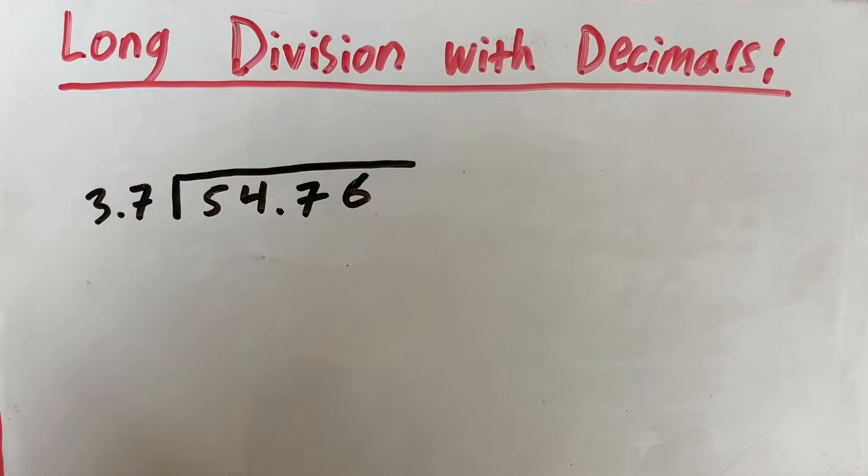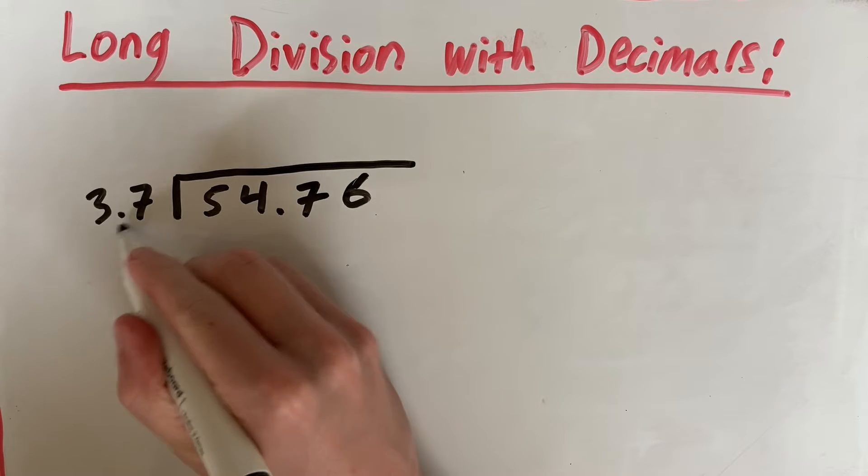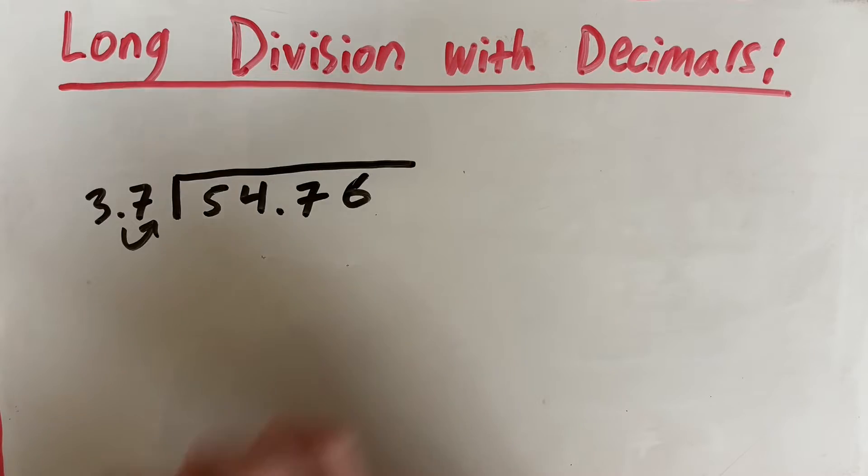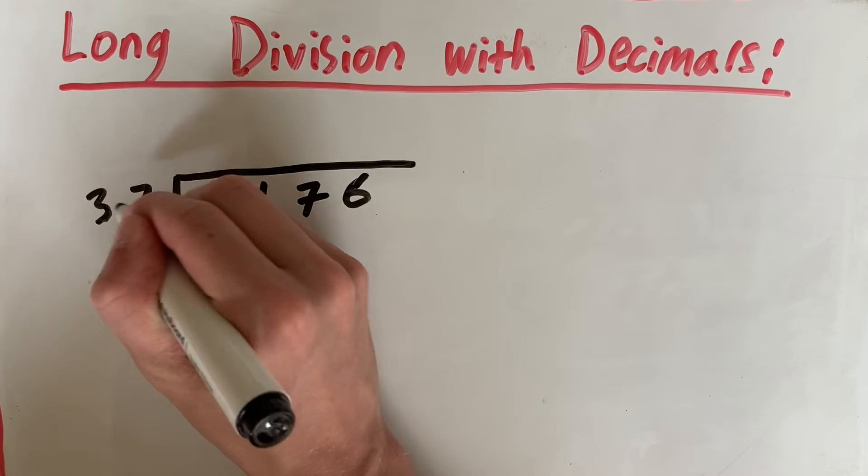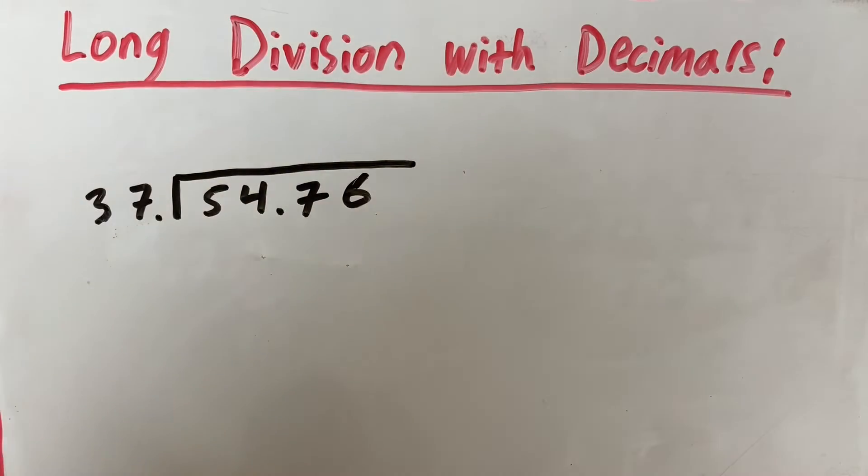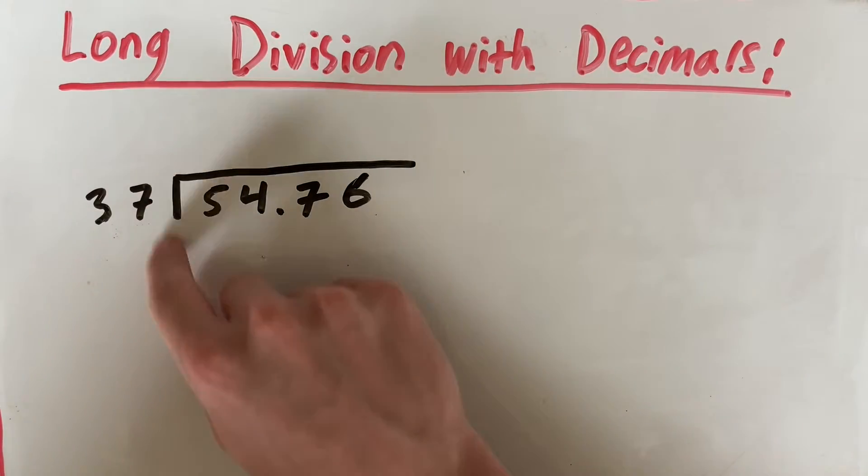So this is tricky because we have 3.7 which is a decimal. So what we actually want to do is we want to get rid of this decimal by shifting it to the right. And you're going to shift it all the way to the right until there is no more decimal. So in this case, until it is just 37.